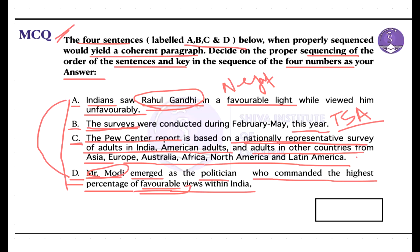Option D could be called as the beginning sentence. Then statement A follows statement D to provide a contrasting viewpoint. After introducing Modi's favorable perception, it contrasts this with Rahul Gandhi's mixed perception — some people accept him, some do not. This statement creates a juxtaposition, illustrating that while Modi was widely viewed positively, opinions about Rahul Gandhi were divided. That is the idea that option D and A point to.